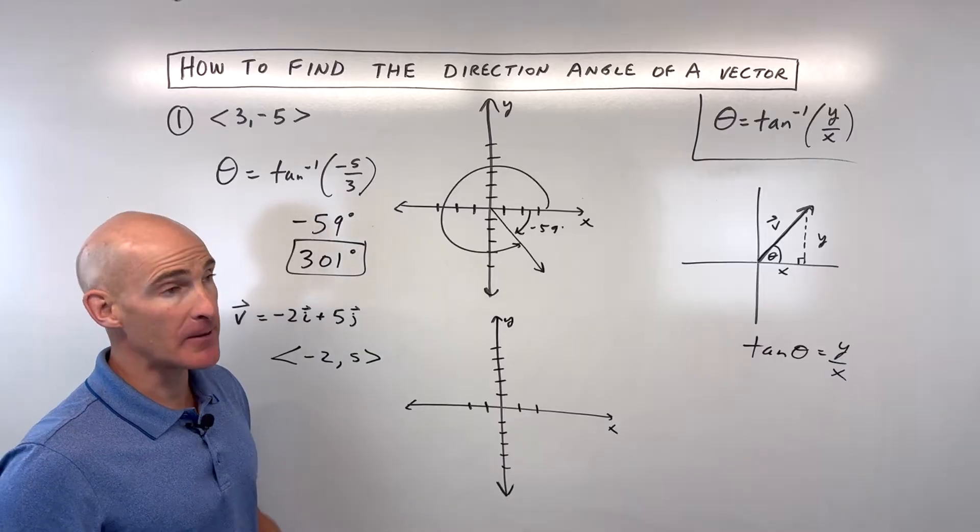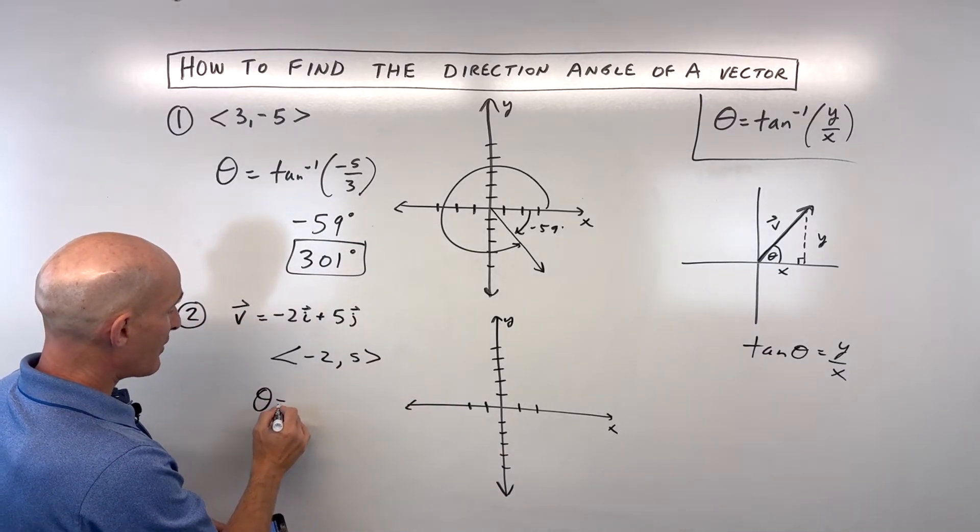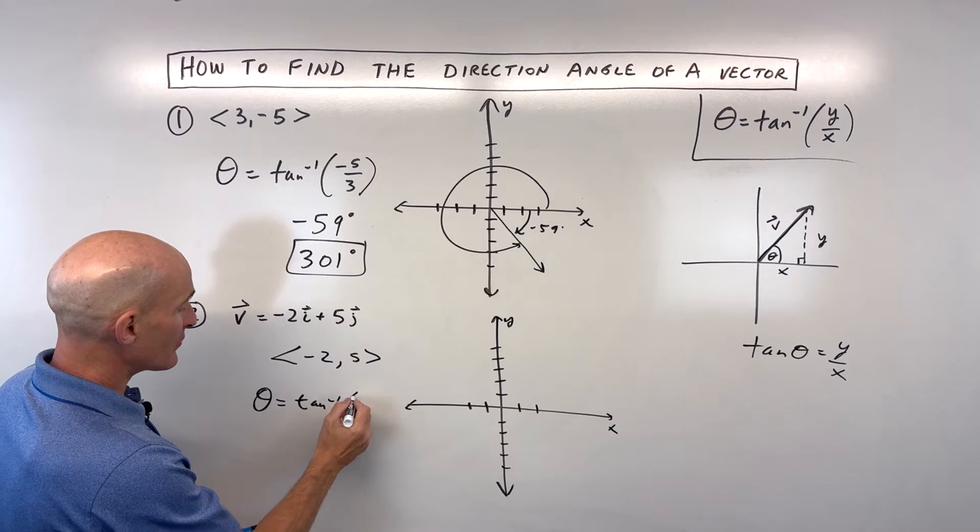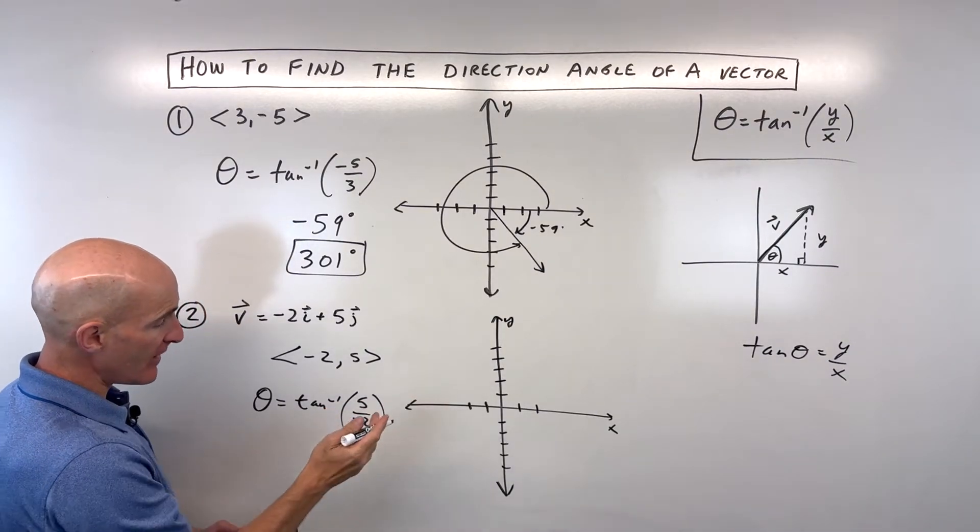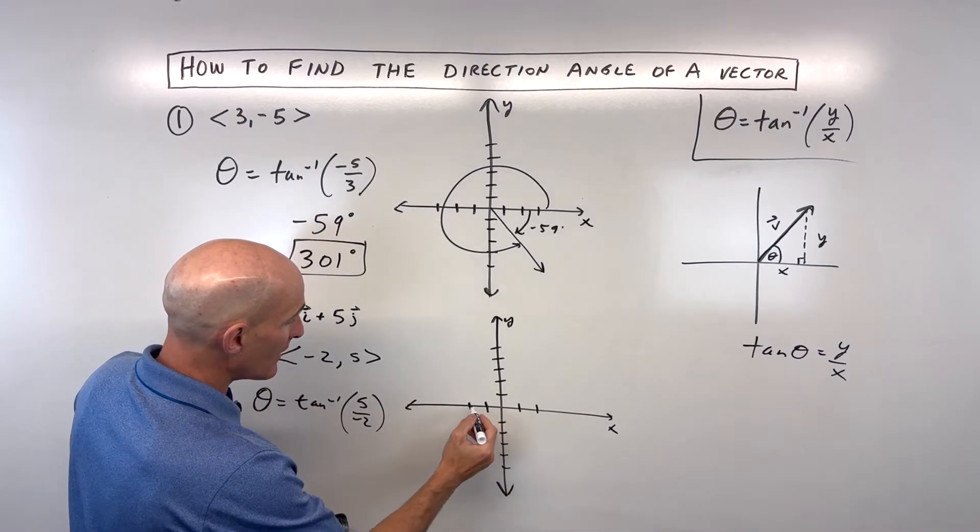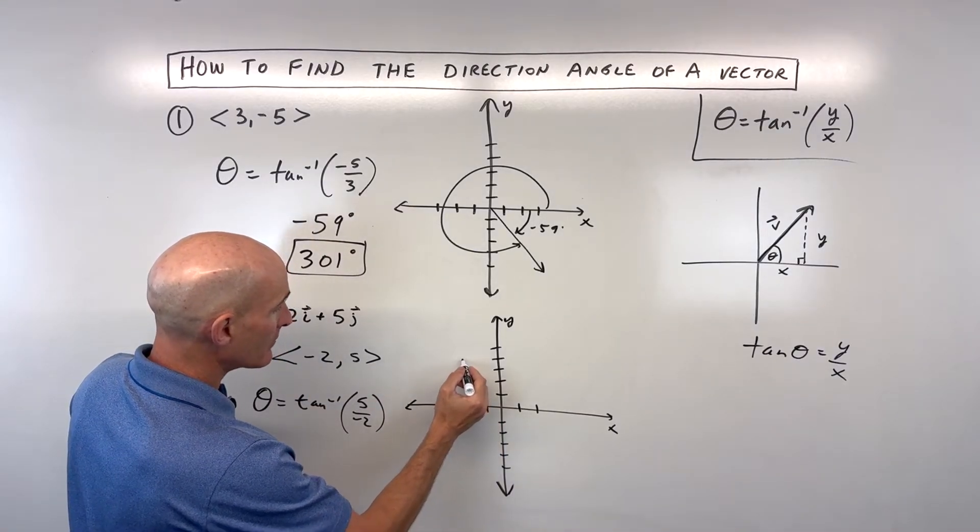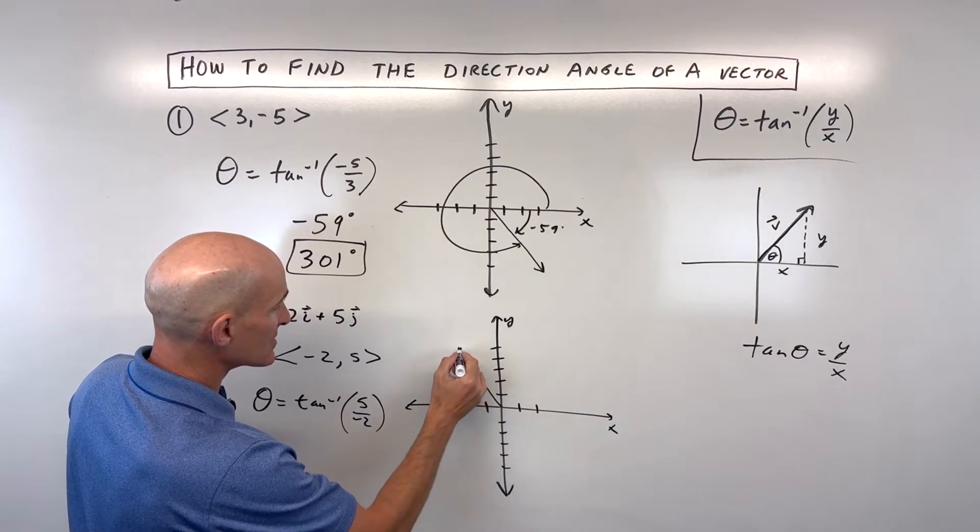But going now to our formula, we've got theta equals the tangent inverse of y divided by x. Let's draw the vector. So, negative 2, 5 means we're going left 2, up 5. Our vector looks something like that.